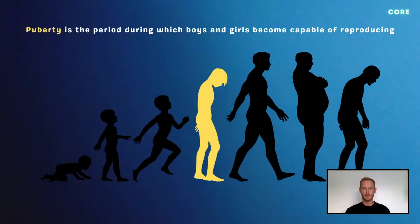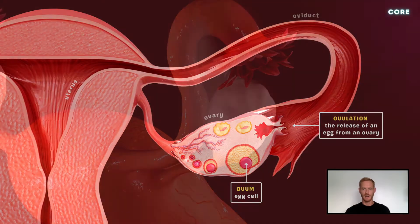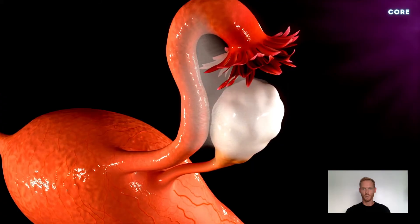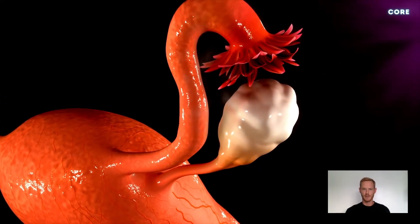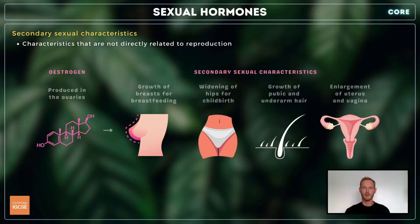Puberty is the period of time during which boys and girls reach sexual maturity and become capable of reproduction. During this period, which typically occurs between the ages of 10 and 14, a young girl's ovaries begin to release eggs. At around the same time, the ovaries also release a group of female sex hormones called oestrogens into the bloodstream. These hormones induce the development of secondary sexual characteristics, which are physical features associated with puberty that are not directly related to reproduction.